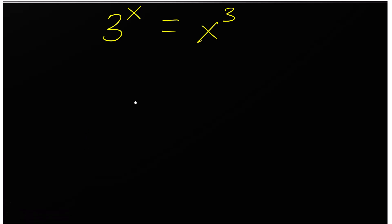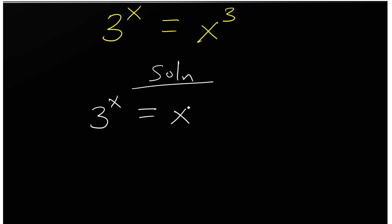Welcome to another video. We are giving 3 to the power x equals x to the power 3, so we have to find the value of x. Finding the value of x directly would be complicated and intricate, but with the help of the Lambert W function we can find an approximate value for x.